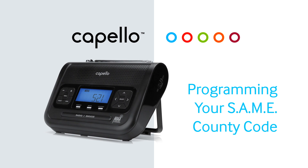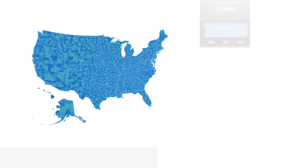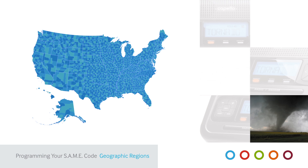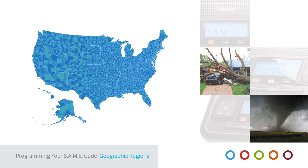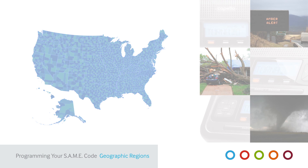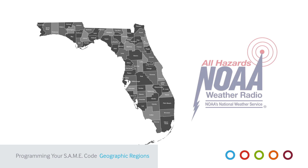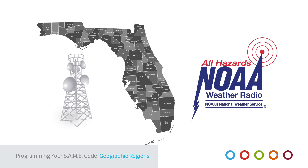Programming your SAME County Code. Your Capello Safe and Sound Radio provides several options for setting the geographic regions you wish to receive broadcasts for local weather and emergency information. Your radio is already pre-programmed to receive any NOAA weather radio broadcast within range of the nearest transmitter.